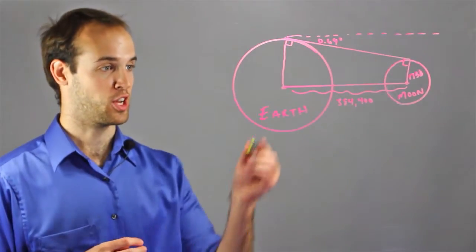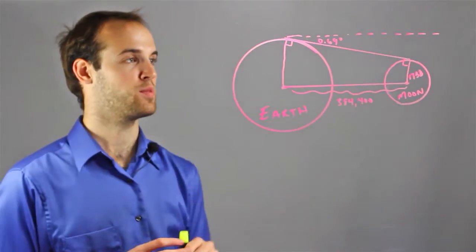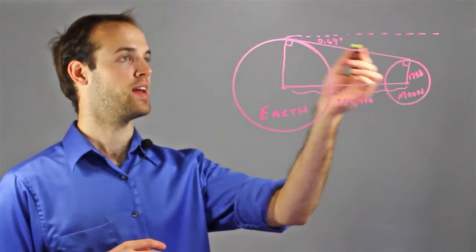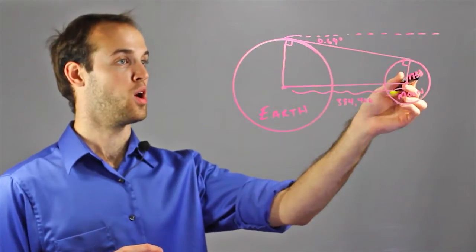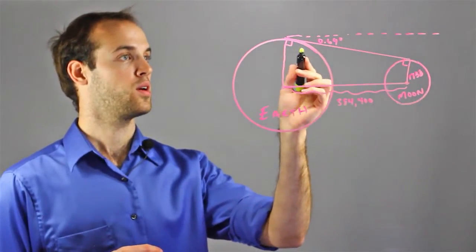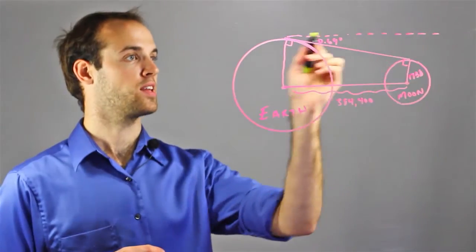So let's take a look at our picture. Here we have the Earth, and here we have the Moon. And let's say the Moon is about 0.69 degrees below the Earth, which I can denote by drawing this dotted line right here.